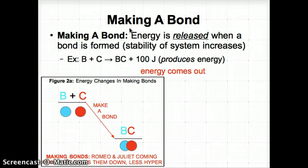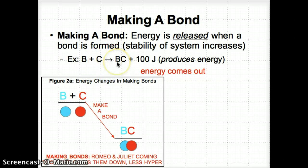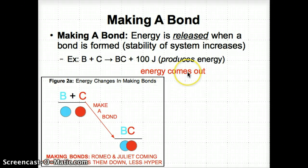Let's talk about making a bond. When a bond is formed, energy is released and the stability of the system increases as the atoms come together. An example of this is atom B and atom C reacting to form molecule BC, which produces energy on the product side — the right side of the arrow. We can think of this using Figure 2a, which shows energy changes in making bonds.